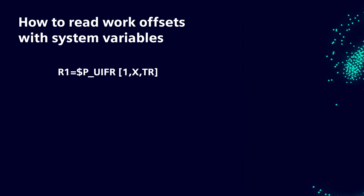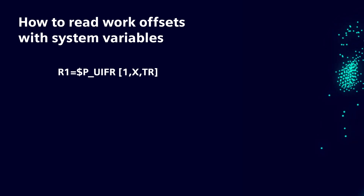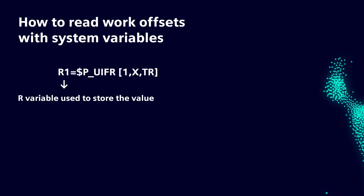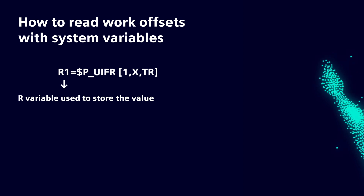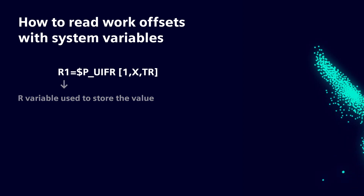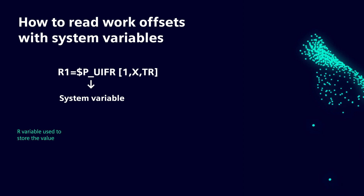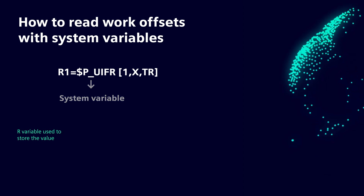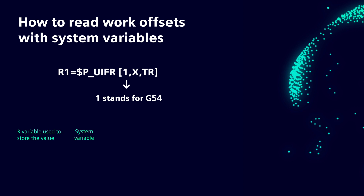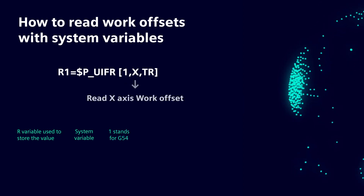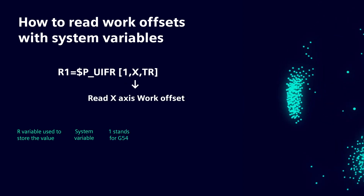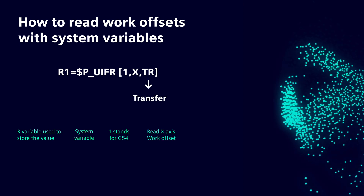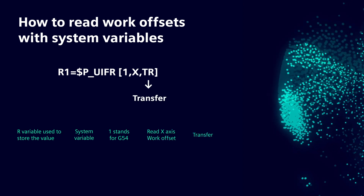Let's understand this in detail. R1 is used to store the value of the X axis, R2 for Y, and R3 for Z. $P_UIFR is the system variable, and 1 stands for G54. Next, define the access name to read out the position — TR stands for translate, or transfer the course value to the R variable.